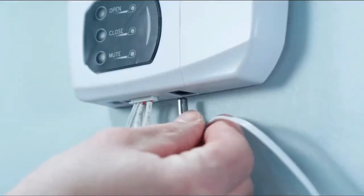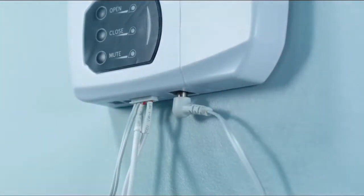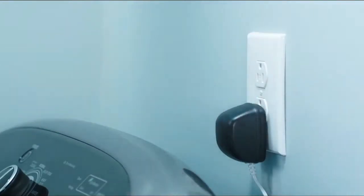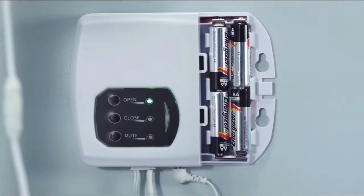Plug the pin on the end of the AC power adapter cord into the bottom of the control panel, and then plug the AC adapter into a wall outlet. To set up the battery backup system, open the front of the control panel.